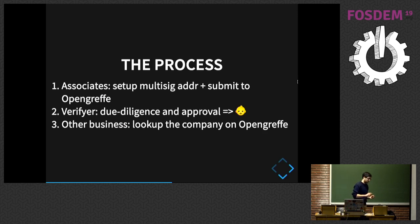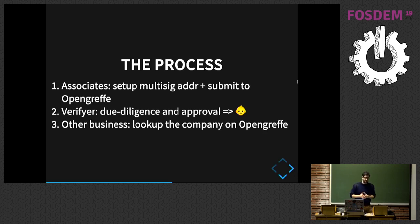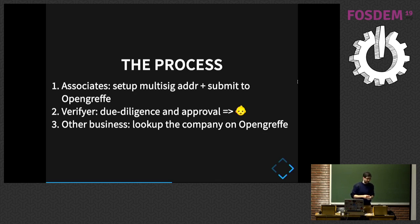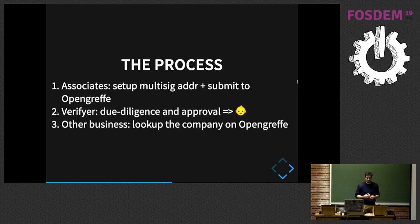This is how the code we did is working, more or less. Associates — or founders — set up a multisig address to which they send their capital, the amount they want to start doing business with. They submit this to the OpenGraph record. Then, as a second step, it's important that there is a verifier — an entity, a company, something — which is going to look up the associates, make sure they exist, make sure the capital has been allocated, and basically do all the work needed to make sure things are in order.